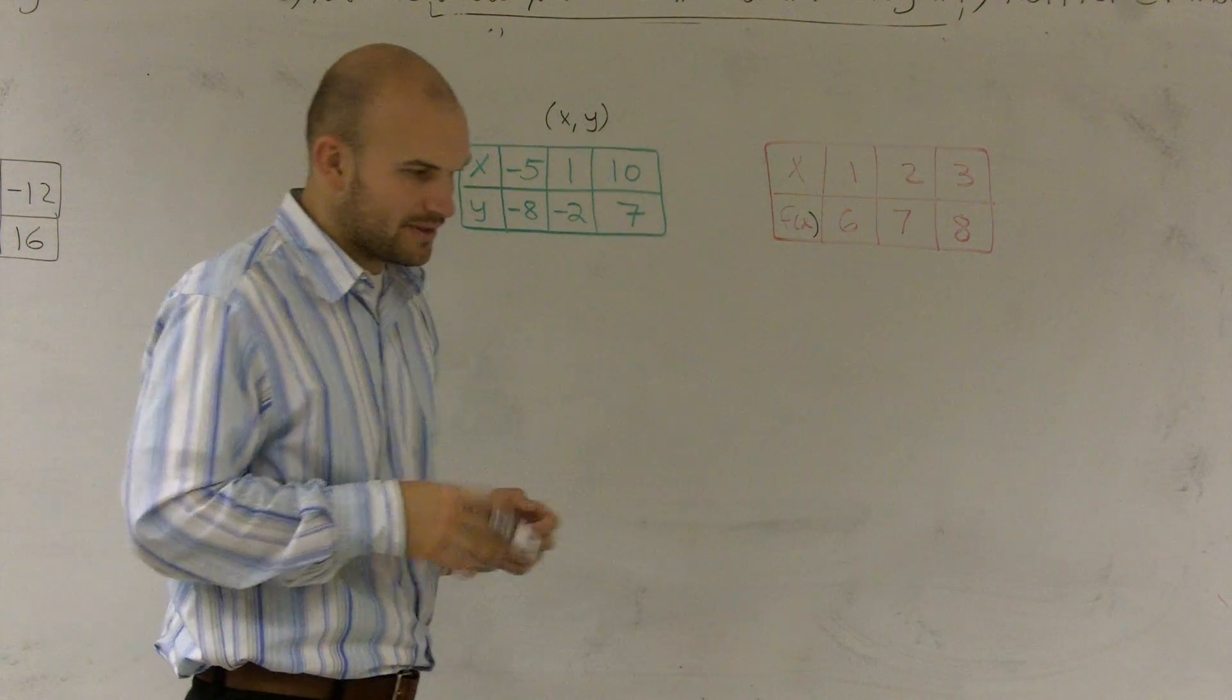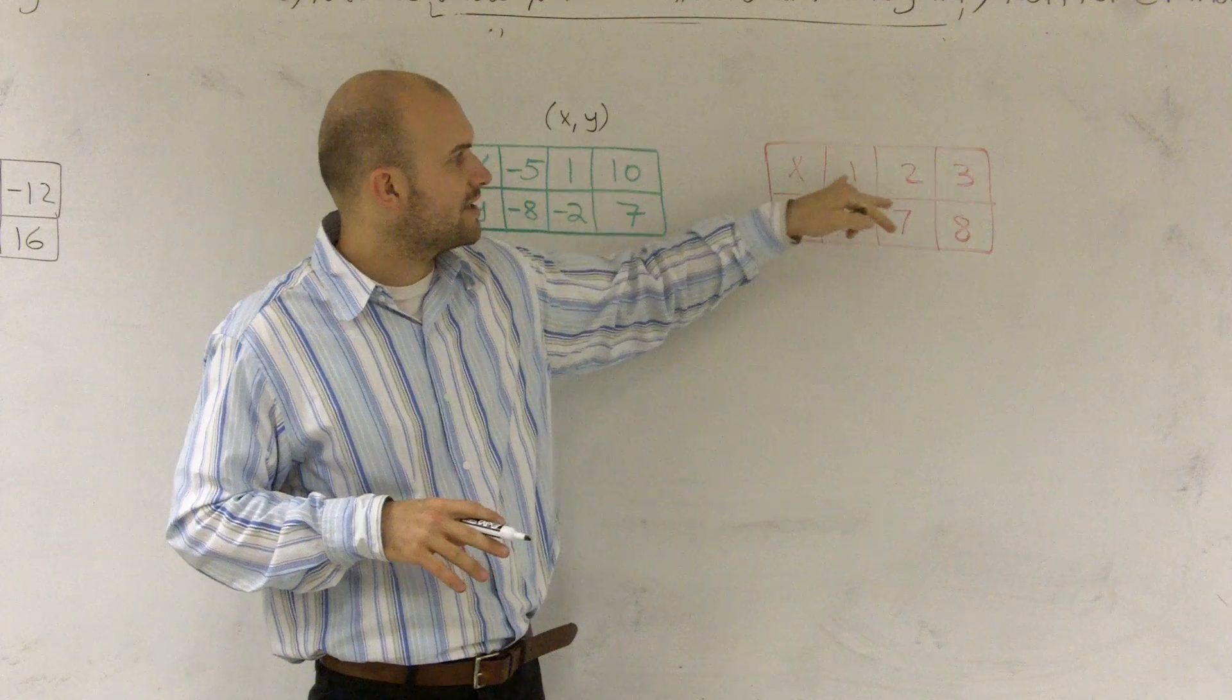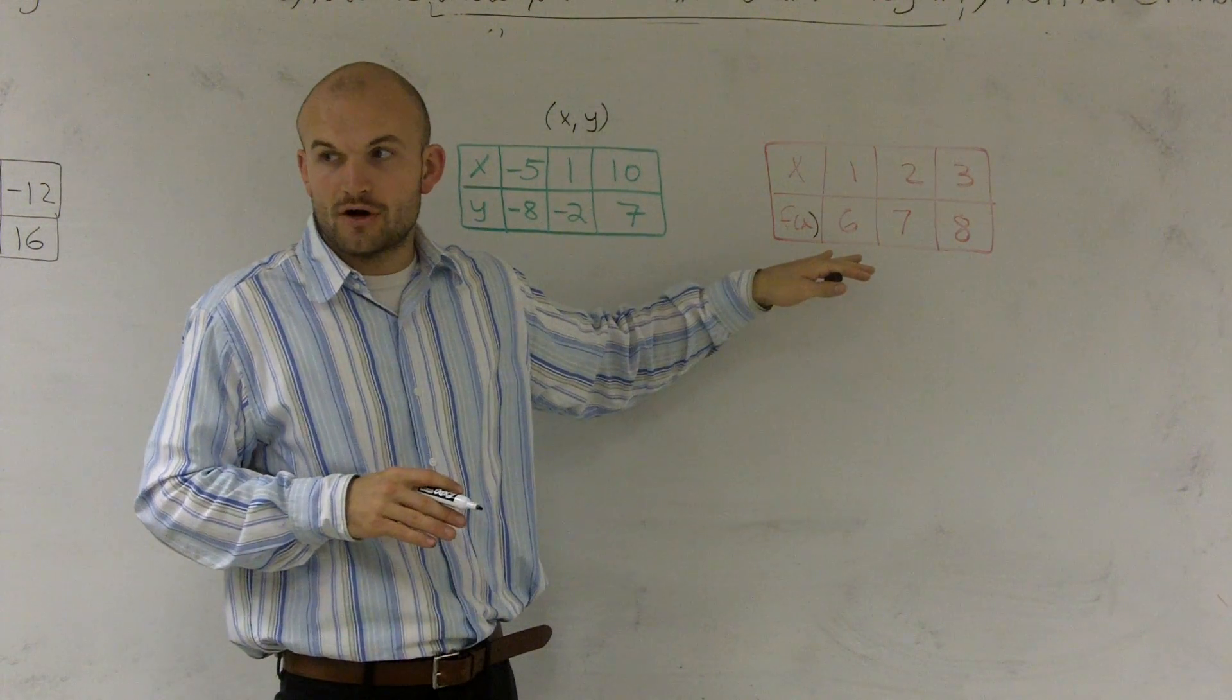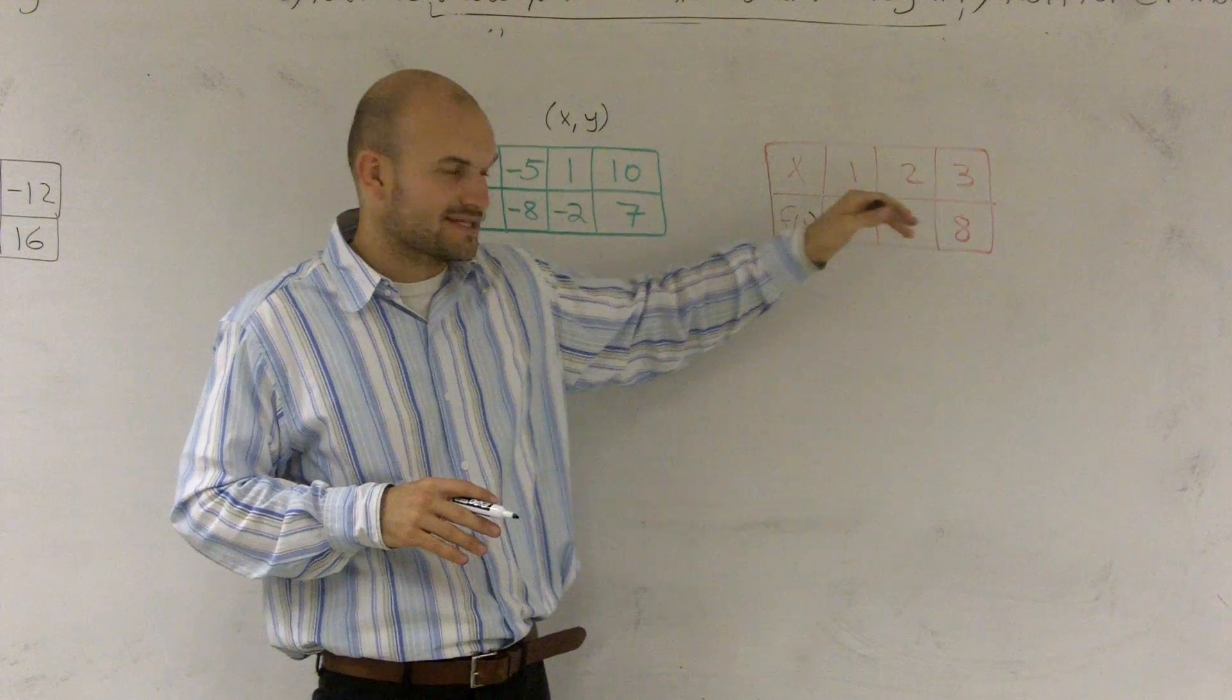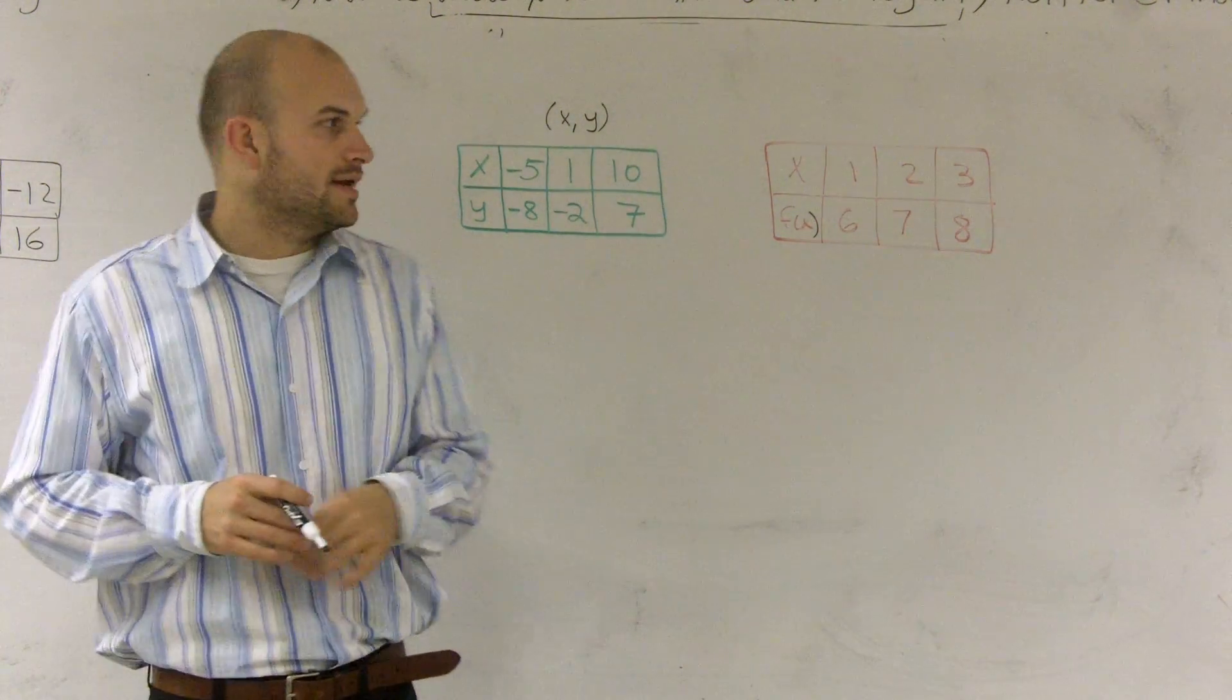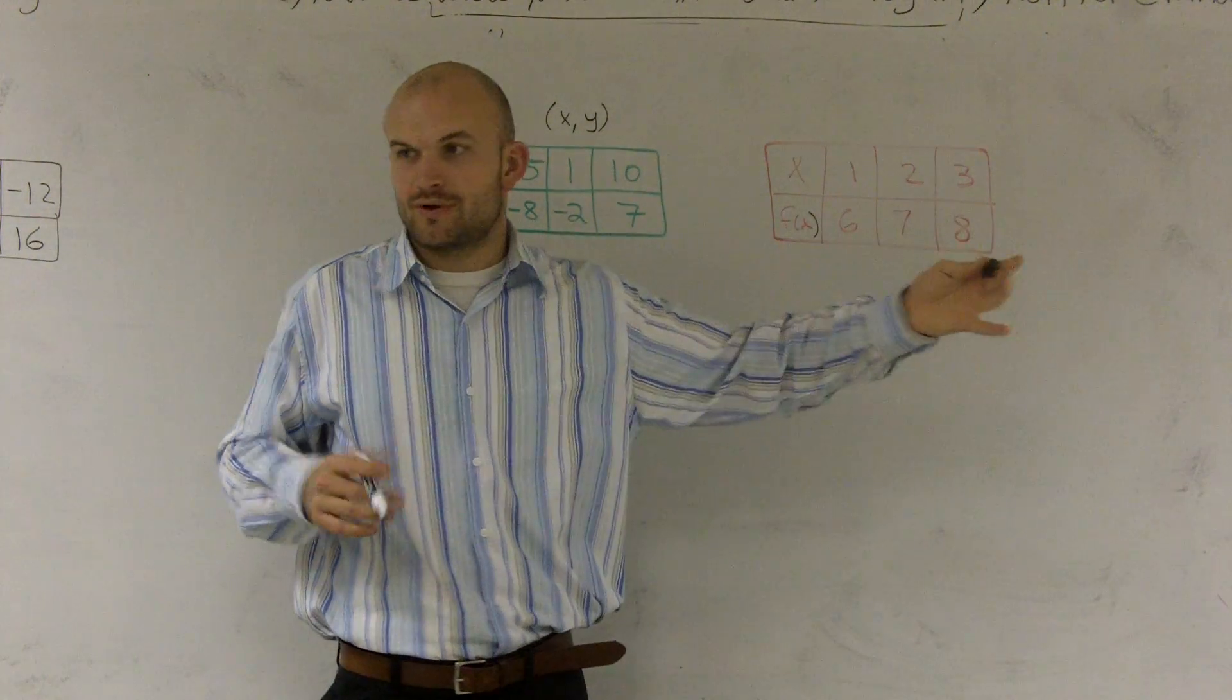I'm going to work on this red one because I think it's simpler. I chose the x values 1, 2, and 3. The output values, which we call our f of x, are going to be 6, 7, and 8. What I have to do is see how they're relating to each other. I look at number 1. To go from 1 to 6, what do I have to do? How do they relate?